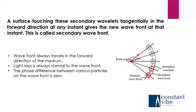That means the wavefront always travels in the forward direction of the medium. Light rays are always normal — perpendicular — to the wavefront. The phase difference between various particles on the wavefront is zero. The surface touching these secondary wavelets tangentially in the forward direction at any instant gives the new wavefront at that instant.